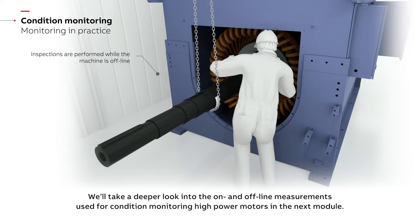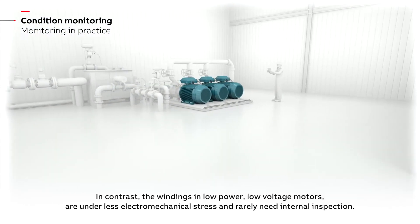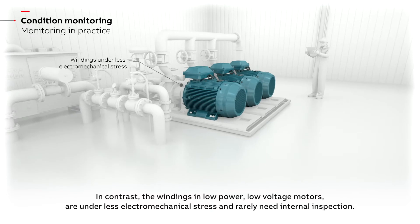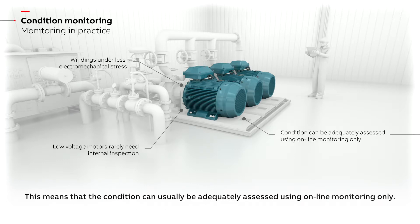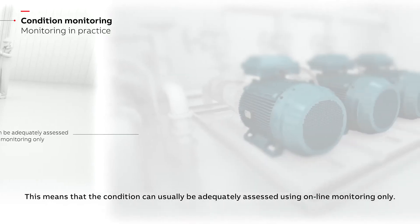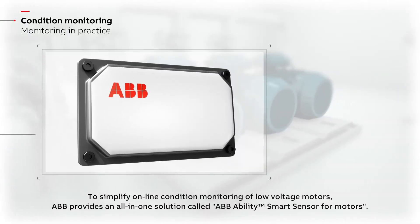We'll take a deeper look into the on and offline measurements used for condition monitoring of higher power motors in the next module. In contrast, the windings in low power, low voltage motors are under less electromechanical stress and rarely need internal inspection. This means that the condition can usually be adequately assessed using online monitoring only.